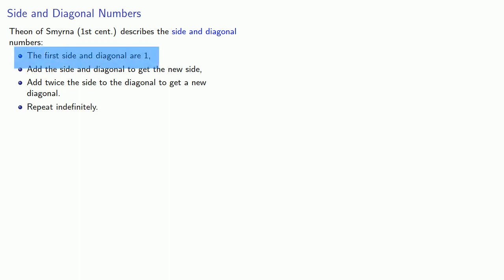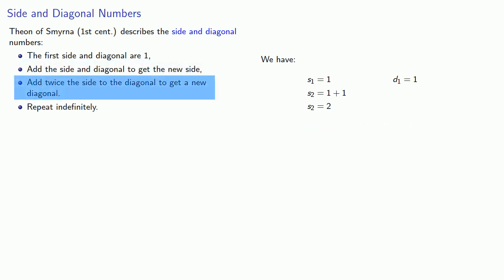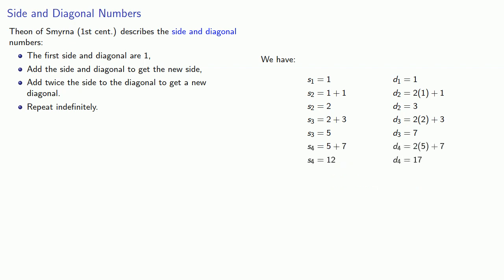Starting with side and diagonal both equal to 1, we get a new side by adding the side and diagonal, and a new diagonal by adding twice the original side plus the original diagonal. This gives us the next pair, and we find the next side by adding side and diagonal, and the next diagonal by taking twice the side plus the diagonal. We can continue this as far as we want.